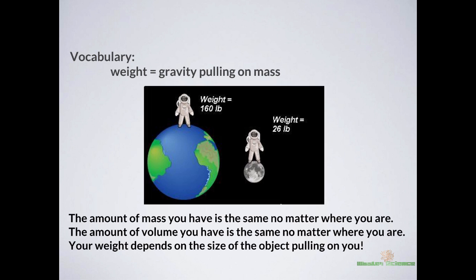While we're on this topic, let's talk about weight and mass. In science we often use the word mass instead of weight. Weight has to do with the gravity pulling on the mass, and your weight is in proportion to whatever planet you're on. We always use the word mass because your mass doesn't change no matter where you go, and neither does your volume. But your weight depends on the size of the object that's pulling on you.